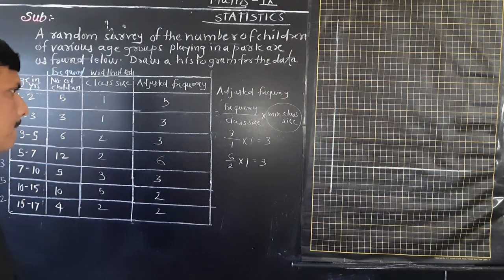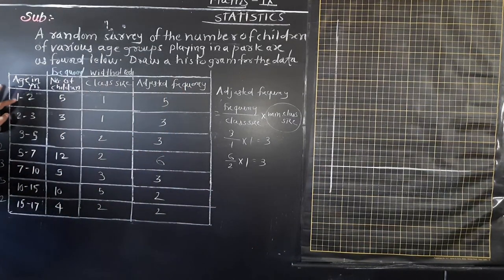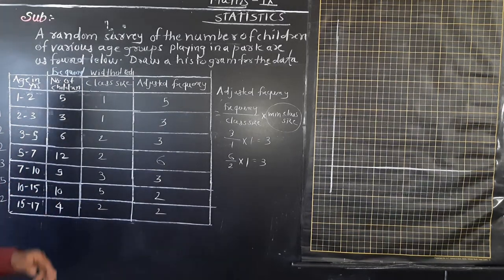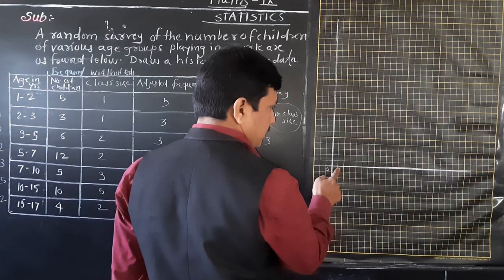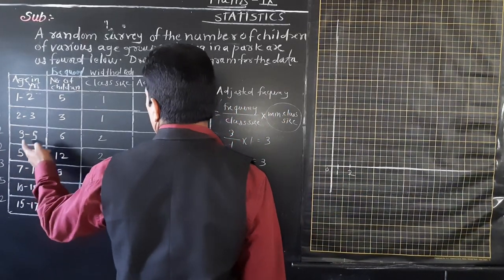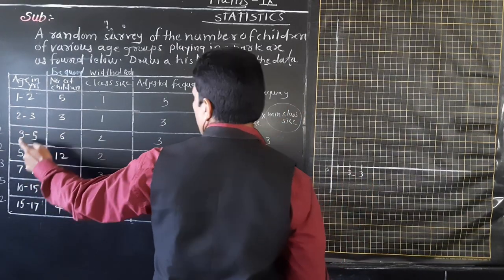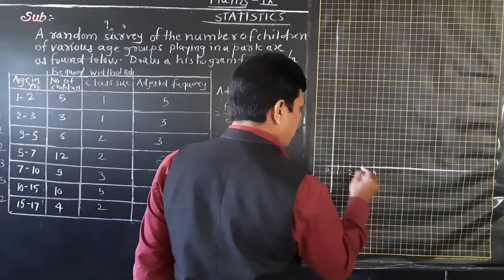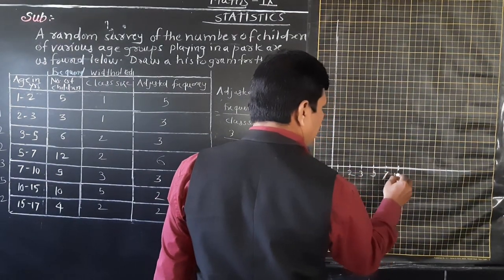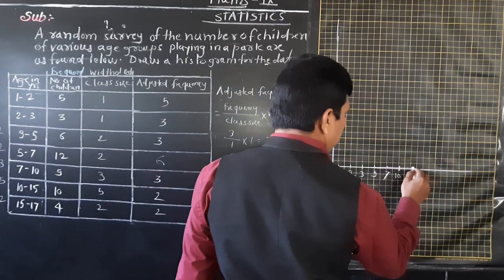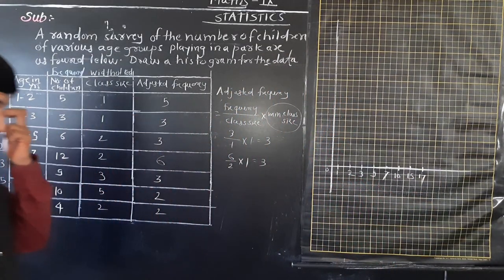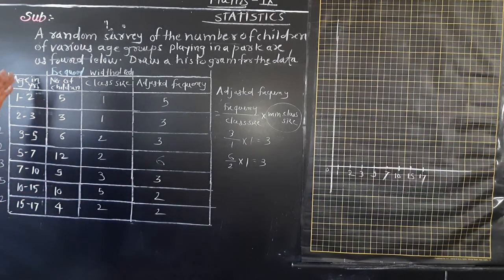Now this is the origin. We need to mark the intervals on the x-axis: 1 to 2, 2 to 3, 3 to 5, 5 to 7, 7 to 10, 10 to 15, and 15 to 17. From 0 to 1 nothing is there. So starting from 1, we mark 2, then 3, then 5, then 7, then 10, then 15, then 17 on the x-axis. This is the information taken on the x-axis.